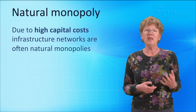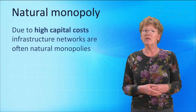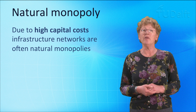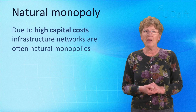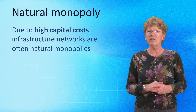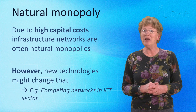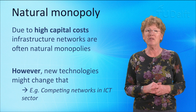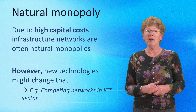Why is there no competition between electricity grids? This is because the grid is a natural monopoly. The existing infrastructure network was established over many decades and represents a massive capital cost. The cost of building a competing grid is simply too high. This is the case for many infrastructure networks. However, new technologies may change that picture. In the world of information and telecommunication services, for example, we have seen competing networks come up over the past two decades, both fixed and wireless networks.